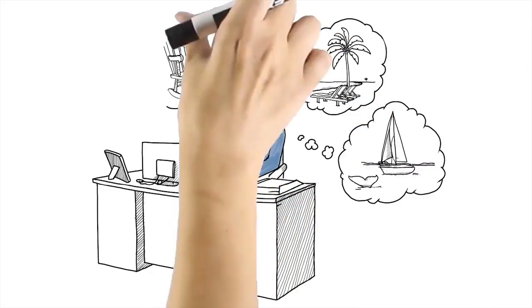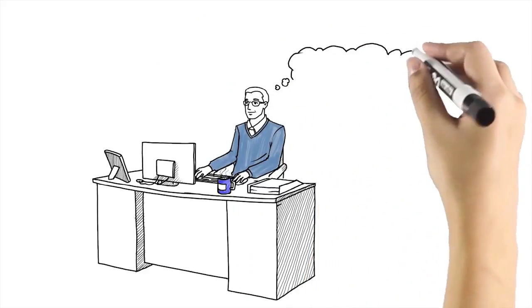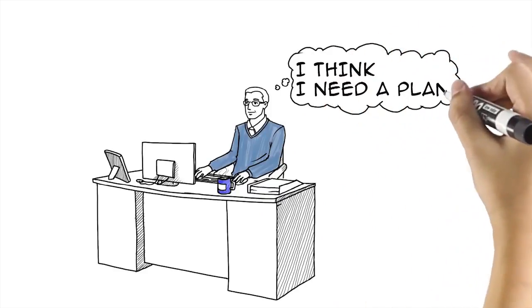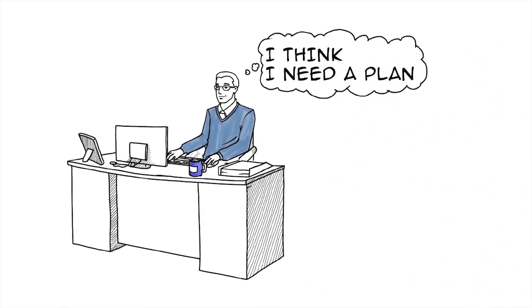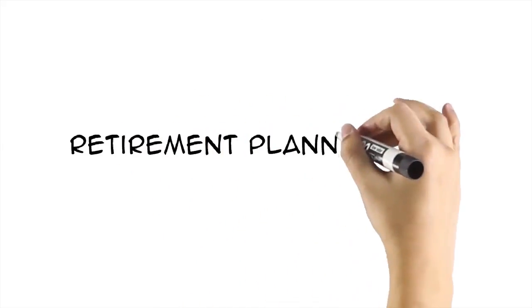Financial security in retirement doesn't just happen. It takes planning and commitment, and yes, it takes money. Enough money to live on for at least 20 years, maybe more. Here are some financial planning tips that can help you succeed.